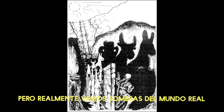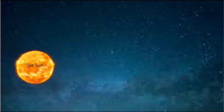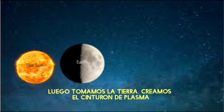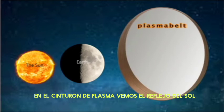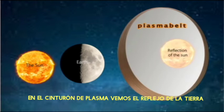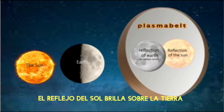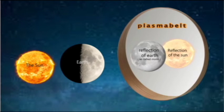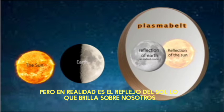In fact, we think we see something, but we really see shadows of the real world. So, first we take the Sun, then we take the Earth, we create the plasma belt. On the plasma belt, we see the reflection of the Sun. On the plasma belt, we see the reflection of Earth. The reflection of the Sun is shining on the Earth. So everybody is thinking that the Sun is shining on us, but in reality it's the reflection of the Sun that is shining on us.